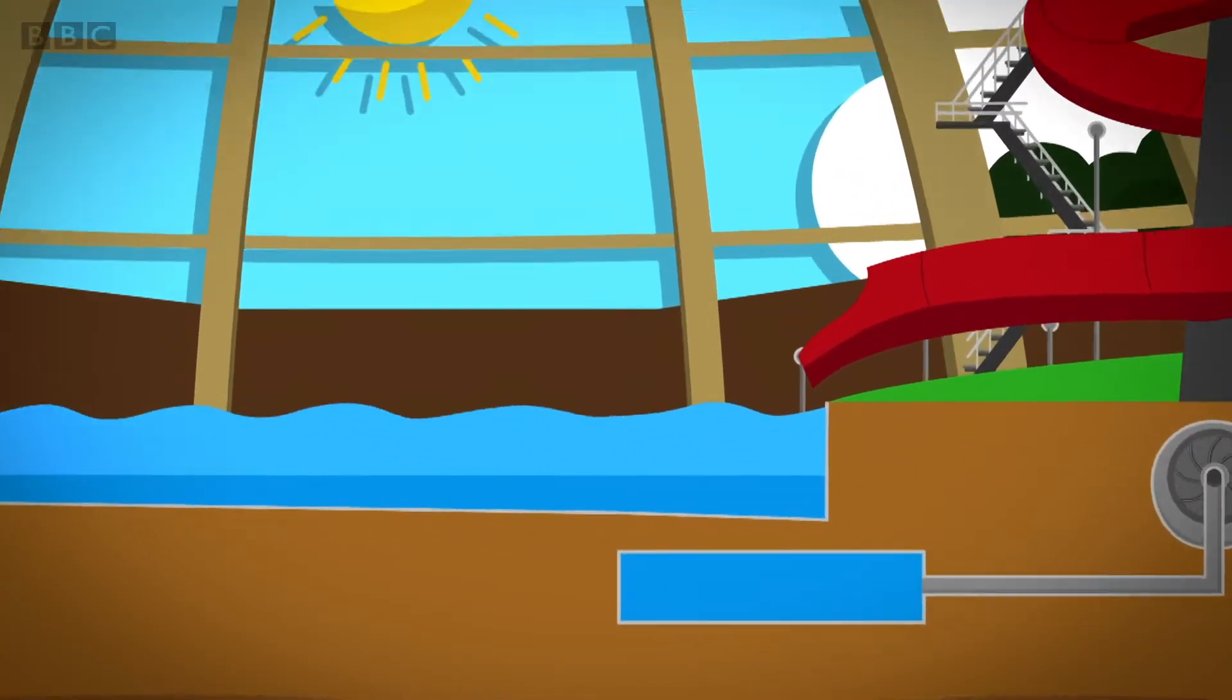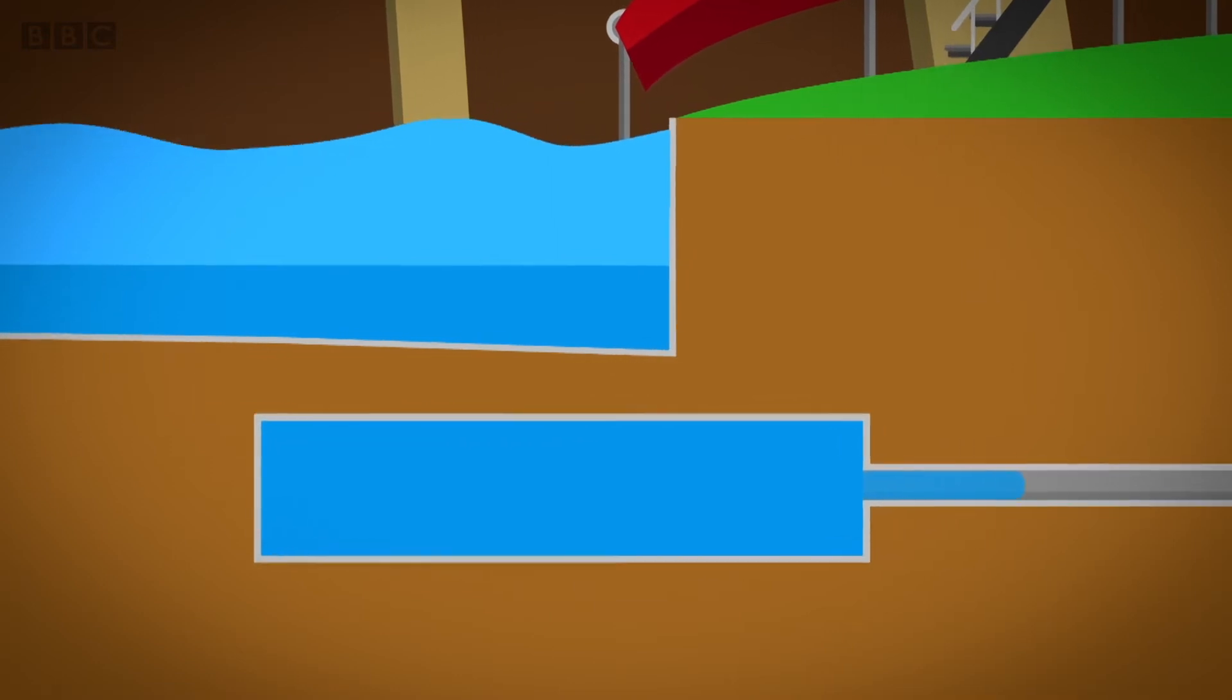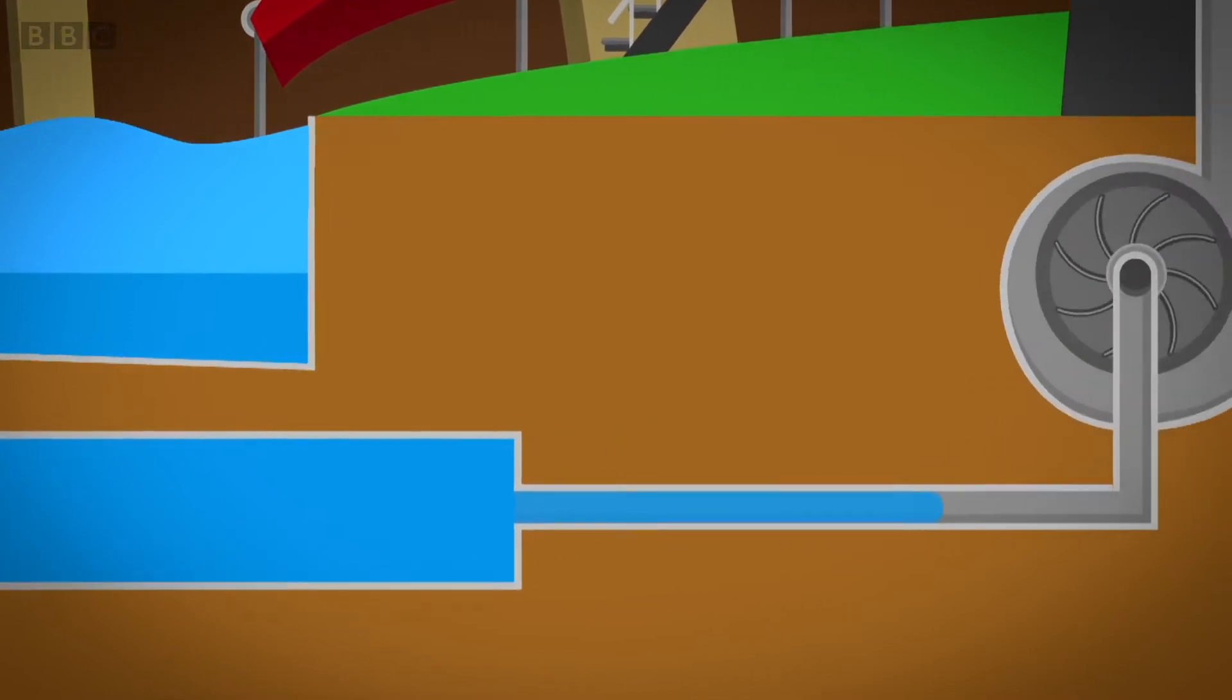And this is how a water pump works. Underneath the pool is a tank called the sump. The water is sucked up from the sump and into a big pipe. It's a bit like sucking a drink with a straw.